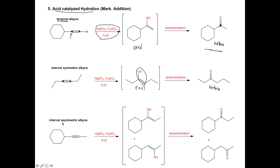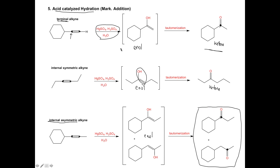When our alkyne is internal and asymmetric, we don't have a Markovnikov carbon, so we're going to add an OH to both sides. When we add that OH to both sides, we get two different enols. Both of these enols can tautomerize, so in this case we have to write the two ketones that we can get — one where the C=O is on the left carbon and one where the C=O is on the right carbon. So in this internal asymmetric example, we have to draw two products. It's important to understand this enol is an unstable intermediate — tautomerization always occurs, and our final products are ketones.